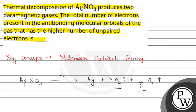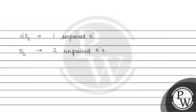तो हमें कोशिन में बताना है: the number of electrons present in anti-bonding molecular orbitals of the gas that has a higher number of unpaired electrons. Higher number of unpaired electrons किसमें हैं? O2 में हैं। So basically हम O2 का electronic configuration लिखते हैं according to molecular orbital theory।